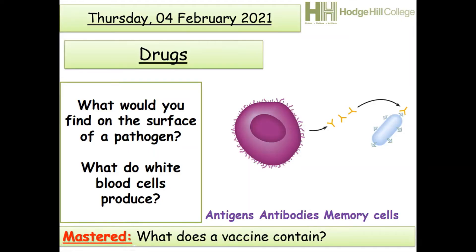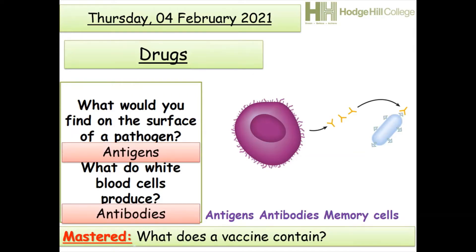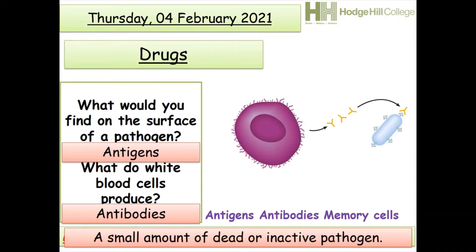This lesson is about drugs. Quick recap from the last lesson: what would you find on the surface of a pathogen? What do white blood cells produce? And what does a vaccine contain? The answers are: antigens on the surface of a pathogen, antibodies produced by white blood cells, and a vaccine contains a small amount of dead or inactive pathogens.